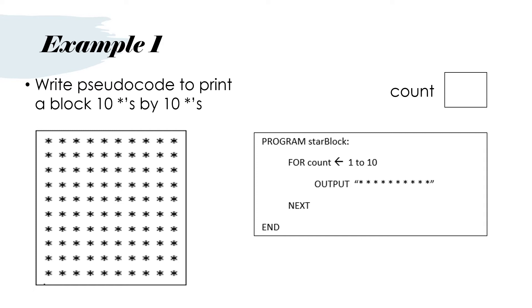The first time we go into the loop: FOR count, assign 1 to 10 — so count gets the value 1. We then do OUTPUT and output the 10 stars, so we get our first row of stars. We say NEXT and go back to the top of the loop, and count goes to 2. We then say OUTPUT and get the next 10 stars. We say NEXT, go back to the top of the loop, and count becomes 3, and so on all the way up to 10.